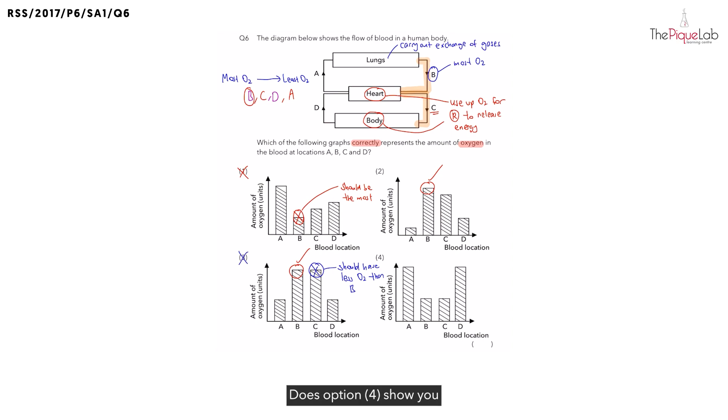Next, what about option four? Does option four show you that B have the most amount of oxygen? No, it should be the most, which means we can cross out option four.